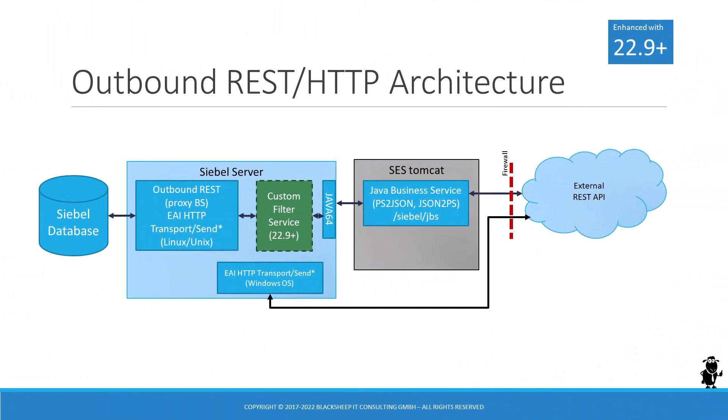From an architectural perspective, filter services stand between the proxy business service and the Java business service that handles the property set to JSON conversion and reverse. It's worth mentioning that the filter service methods will act upon the property set representation of the outgoing request or incoming response. Any conversion to and from JSON happens on the internal application container. Filter services are optional and most probably they'll require a custom implementation in eScript and/or a combination with standard business services and workflow processes.